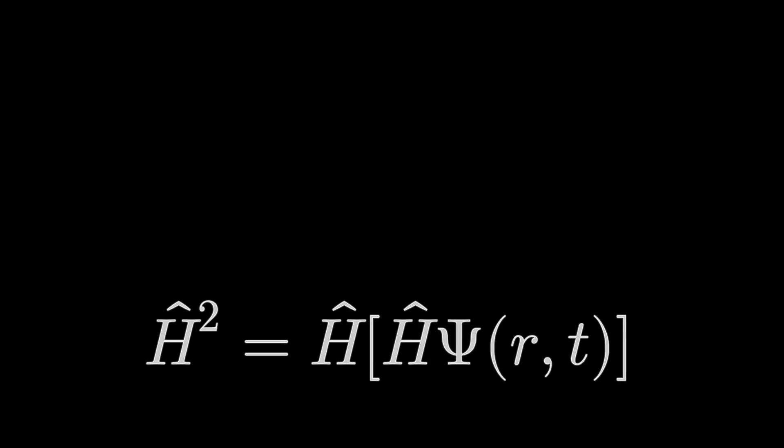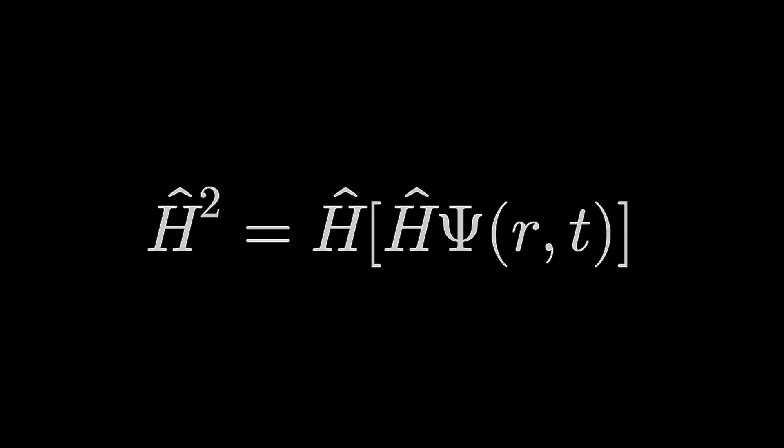What would an operator raised to a power mean? How would we understand it? Let's think about H-hat to the power of 2. This might be thought as H-hat multiplied by H-hat. However, we need a better understanding than that, if we want to put imaginary powers or rational ones or anything that we want. So H-hat squared can be denoted as H-hat multiplied by H-hat acting on capital Ψ(r,t0). So we have a Hamiltonian operator acting on a Hamiltonian operator acting on a time-dependent Schrödinger equation.